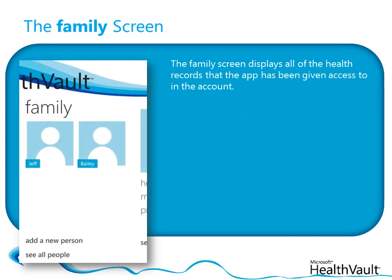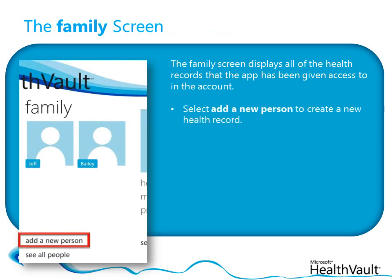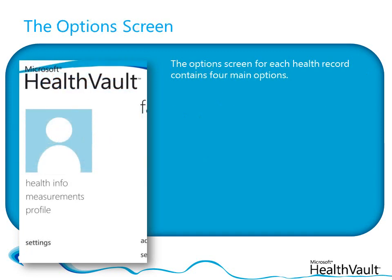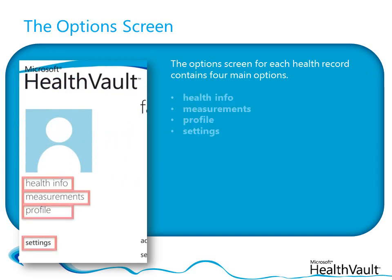If you've allowed access to more than one HealthRecord in your account, when you open the app, you'll see the Family screen. Select Add a new person to create a new HealthRecord for another family member, or select one of the existing HealthRecords to view its main page. When you select a HealthRecord, you'll see the front page with four main options: HealthInfo, Measurements, Profile, and Settings. Let's look briefly at each one in turn.